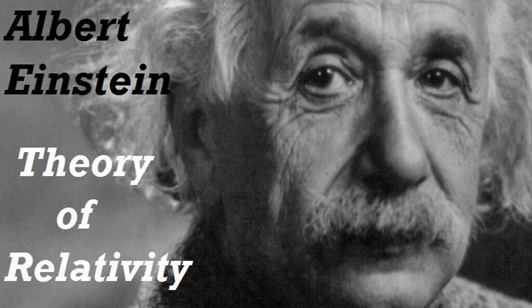Recording by Linda Liu. Relativity: The Special and General Theory by Albert Einstein. Continuing Part 1, Sections 13–15. Section 13: Theorem of the Addition of Velocities — The Experiment of Fizeau. Now in practice we can move clocks and measuring rods only with velocities that are small compared with the velocity of light. Hence we shall hardly be able to compare the results of the previous section directly with the reality.